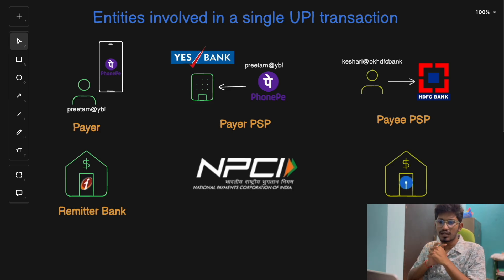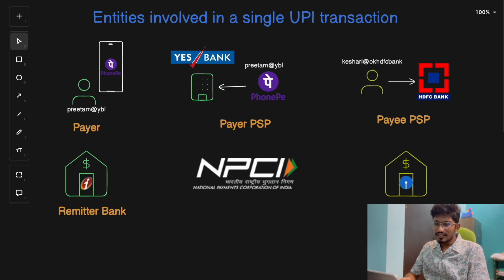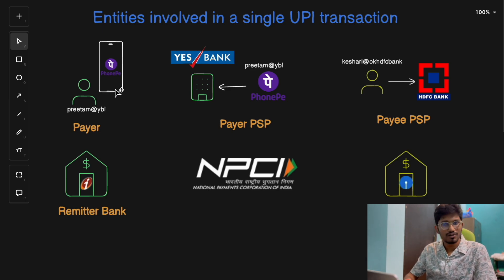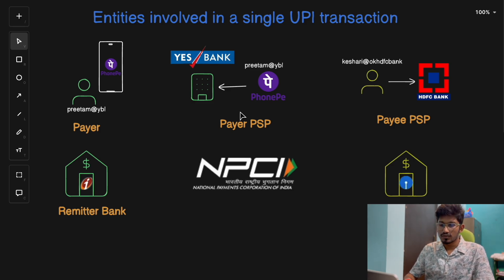Before we dive into the actual process, let's look at the main players or entities involved in a single UPI transaction. The first entity is the Payer — that's you, the person making the payment. Let's say your VPA or Virtual Payment Address is 'pritham@ybl'. The next entity is the Payer PSP, also known as the Payment Service Provider. Your UPI app like Google Pay, PhonePe, or Paytm partners with sponsor banks and uses them as its PSP.